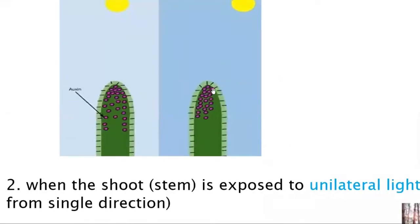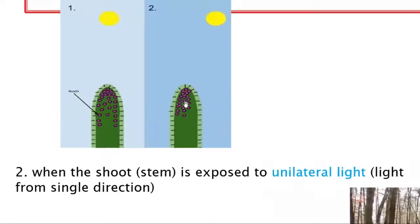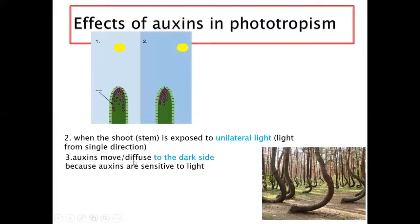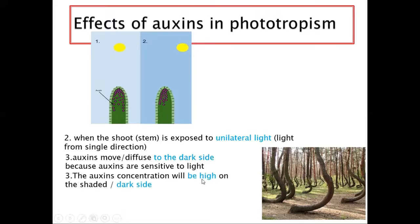You can see that auxins have moved from the light side to the dark side of the shoot — they were distributed equally but now they have migrated. Auxins move or diffuse to the dark side because they are sensitive to light. The auxin concentration will therefore be high on the shaded or dark side.